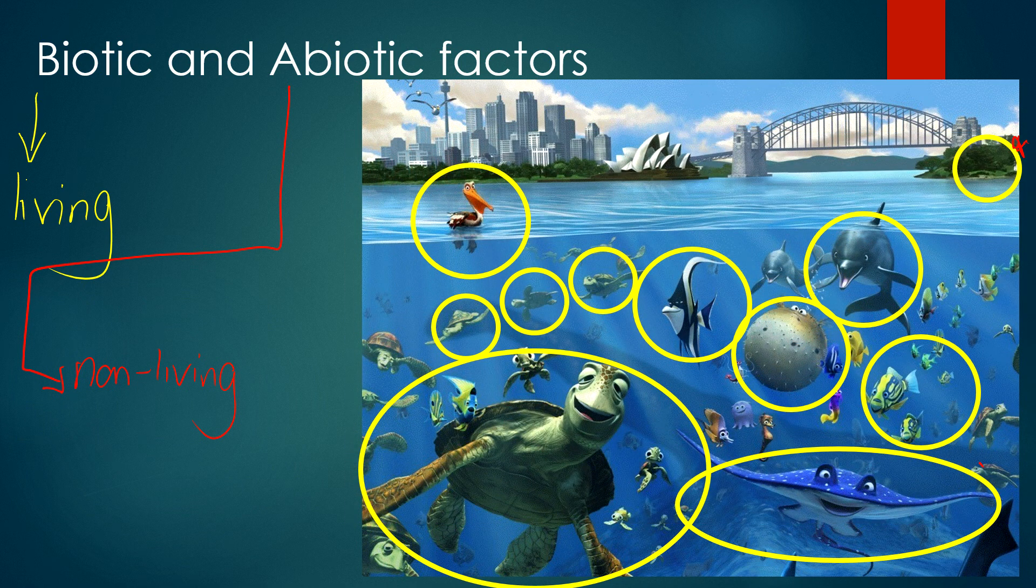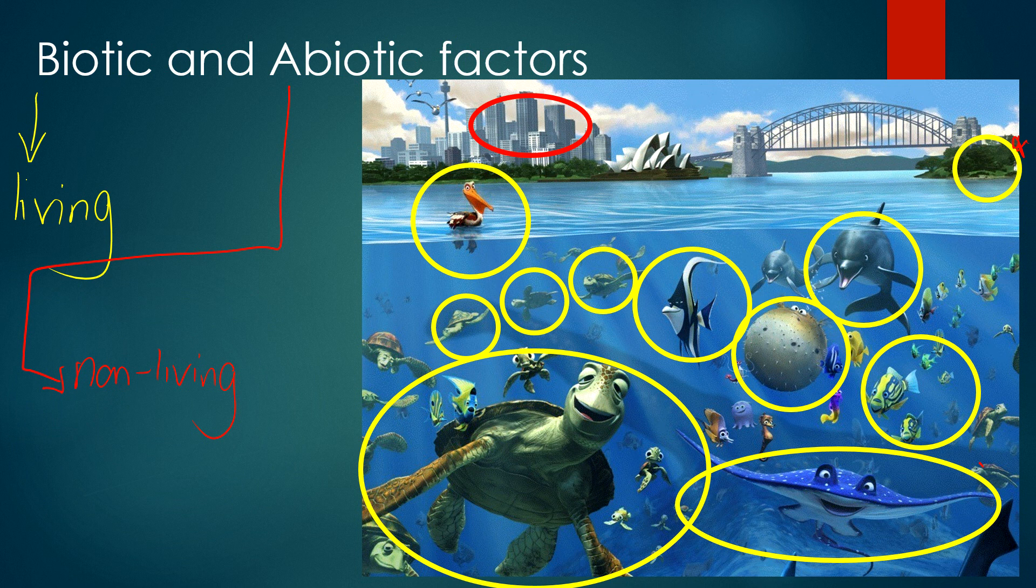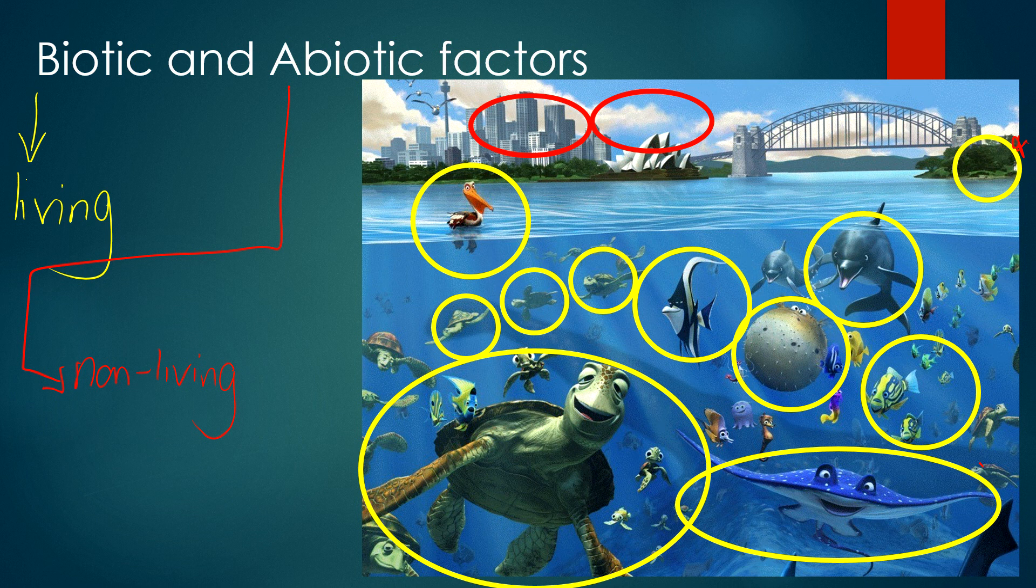Non-living factors within an ecosystem include things such as water, temperature, rainfall, soil, light intensity and elevation. Sometimes bushfires and seasonal changes can also be abiotic factors.